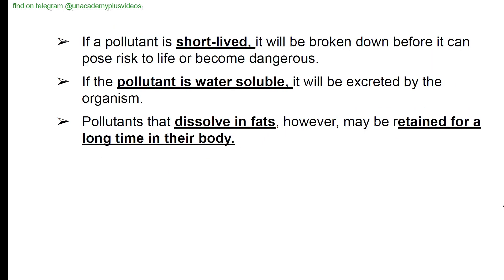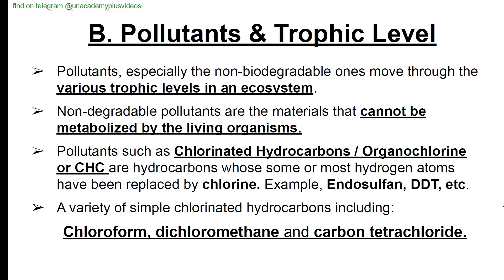If a pollutant is short-lived, it will be broken down before posing risk. If water-soluble, it will be excreted by organisms. Fat-soluble pollutants may be retained for a long time in the body. Non-biodegradable pollutants move through various trophic levels in an ecosystem. Pollutants such as chlorinated hydrocarbons (organochlorines or CHCs) — hydrocarbons where hydrogen atoms are replaced by chlorine — include endosulfan, DDT, chloroform, dichloromethane, and carbon tetrachloride.